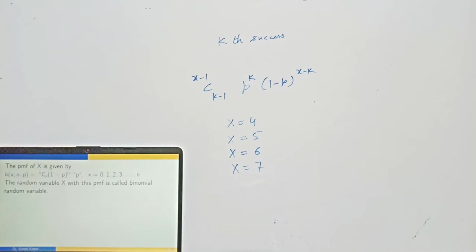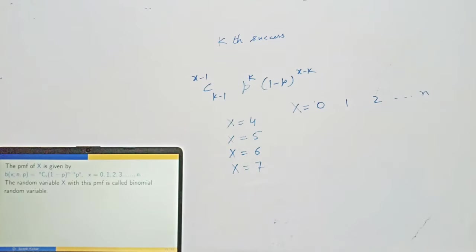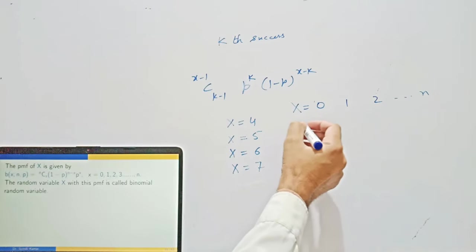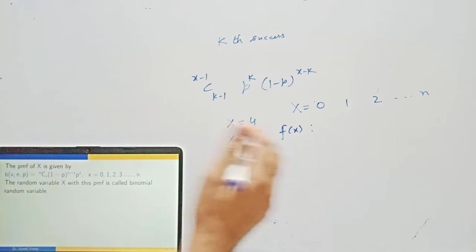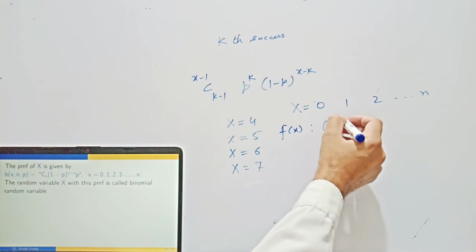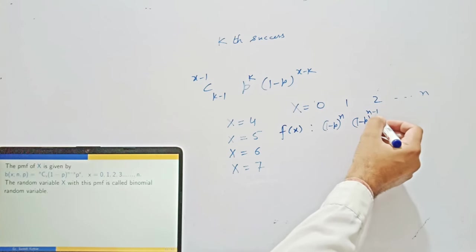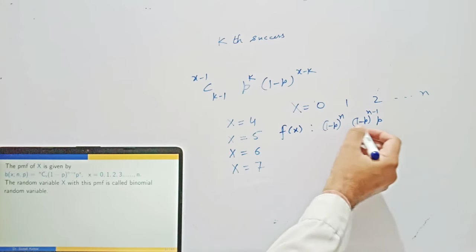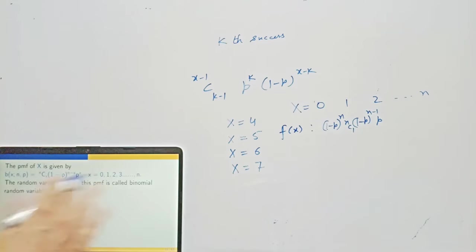The probabilities for different values of X are given by the binomial PMF formula. For x = 0, that is no success and all failures, the probability is (1-P)^n. For x = 1, that is one success and remaining failures, the probability is n×P×(1-P)^(n-1). In general, the PMF is C(n,x) × P^x × (1-P)^(n-x) for x = 0, 1, 2, ..., n.